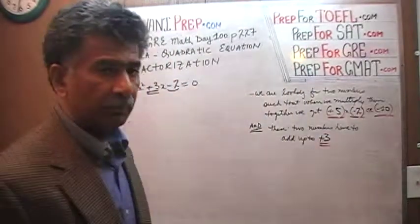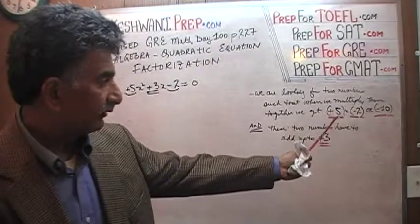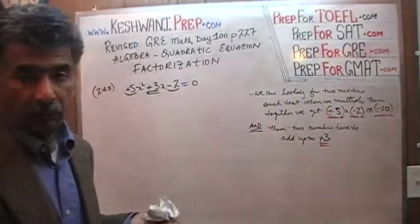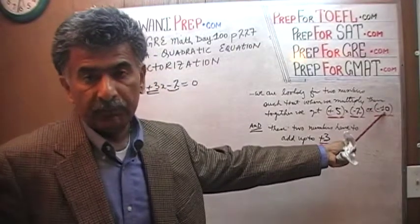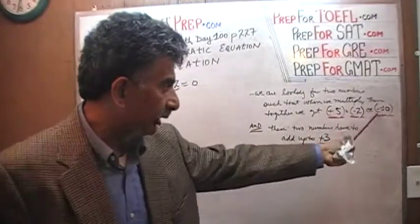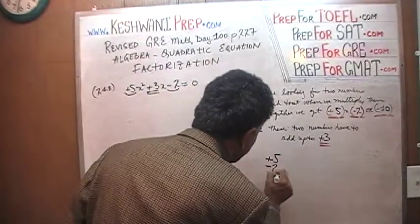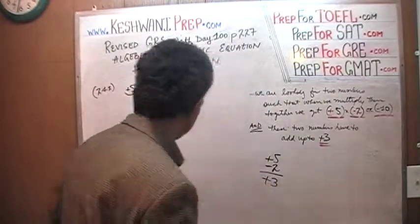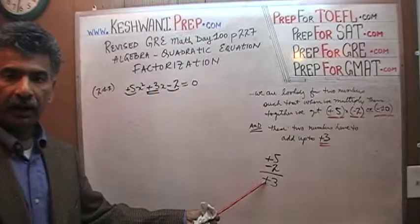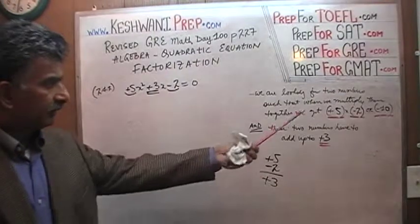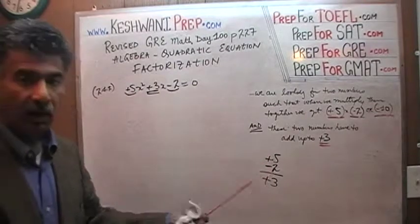And when we add these two numbers, they have to give us positive 3. Can you think of two such numbers? Let's try positive 5 and negative 2 — they are already in front of us. Positive 5 times negative 2 gives negative 10, which is what we need. And positive 5 plus negative 2 gives positive 3, which is also what we need. So positive 5 and negative 2 are our factors.